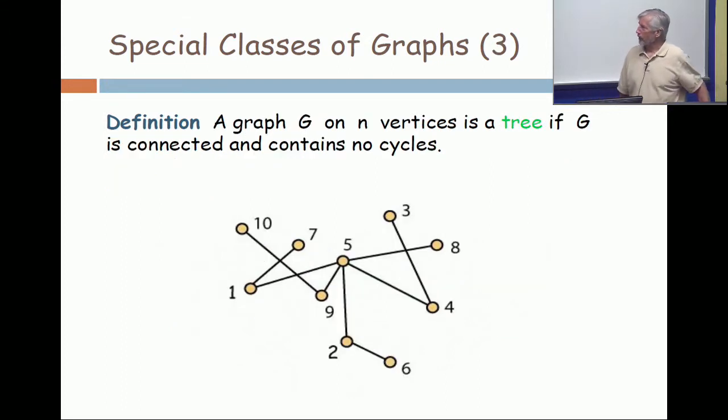Here's a very special class of graphs, a class of trees. A graph on n vertices is a tree if it's connected and it has no cycles.